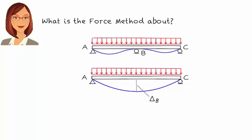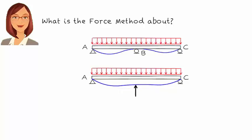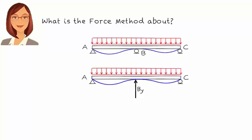Now let's place an upward vertical force at B and gradually increase its magnitude. What would happen to the displacement of the beam at B? It becomes smaller and smaller as the force magnitude increases. When the magnitude of the upward force reaches a specific value, the vertical displacement of the beam at point B becomes zero. Let's refer to this force magnitude as By. By, indeed, is the support reaction at B in the statically indeterminate beam. Note the similarity between the deformed shape of the statically indeterminate beam and the determinate beam with the additional force at B.